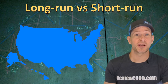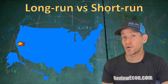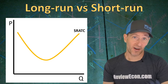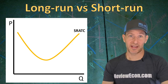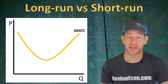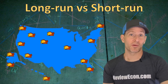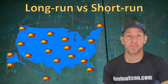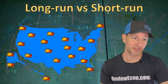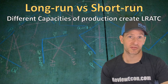If an entrepreneur opens up one taco restaurant, they will have a short run average total cost curve showing their current capacity of production. As they increase output, average total costs are going to fall as the fixed costs are spread over more units, and eventually, because of diminishing marginal returns, average costs will begin to rise. But as that entrepreneur opens up more restaurants, they will have different capacities of production — more restaurants means more ability to produce tacos — and those different capacities give us the long run average total cost curve.